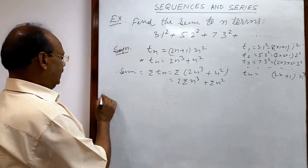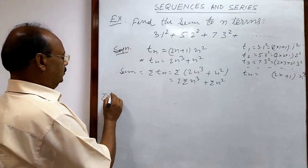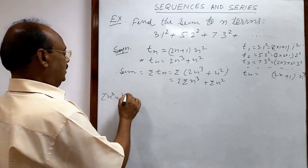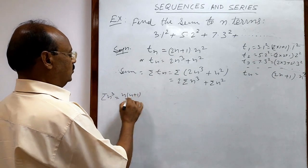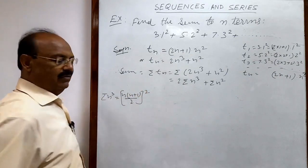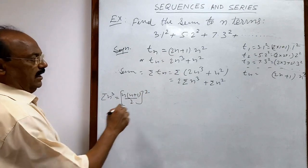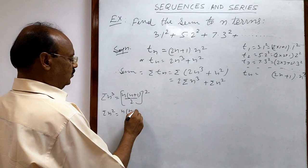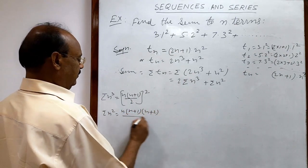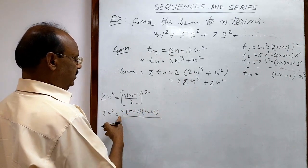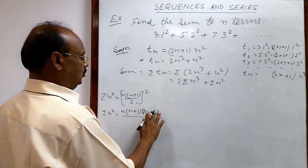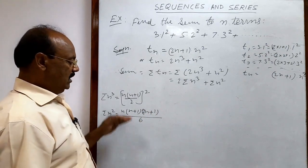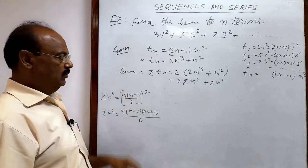We now recall two important formulas discussed in previous videos. First, sigma n cubed, the sum of cubes of first n natural numbers, equals n into n plus 1 divided by 2, whole square. Second, sigma n square equals n into n plus 1 into 2n plus 1, divided by 6. We must remember these very useful formulas.